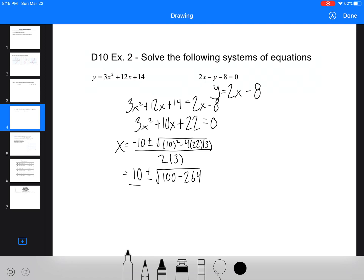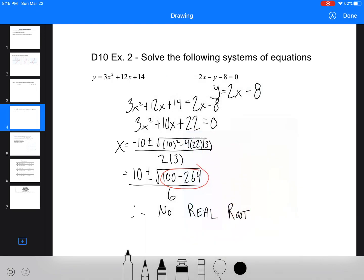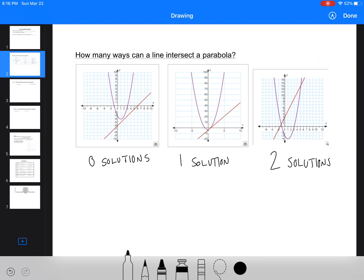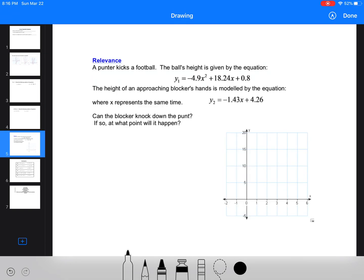100 minus 264 over 6. Therefore we have no real roots, and what we're looking at here is we've got 100 minus 264 is going to give us a negative number in the square root, which is going to give us no real roots, which is going to give us no solutions. Okay, so this is this first case where the quadratic and the linear equation are never going to meet.